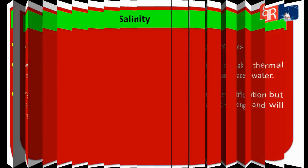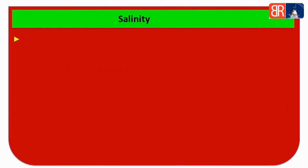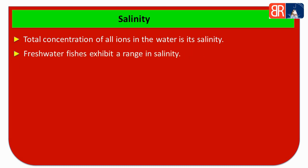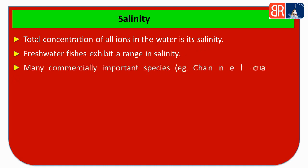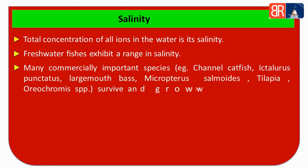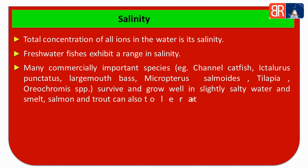Now we will discuss about salinity. The total concentration of all ions in water is called its salinity. Fresh water fishes exhibit a range of salinity tolerance. Many commercially important species, for example channel catfish (Ictalurus punctatus), large mouth bass (Micropterus salmoides), tilapia, and Oreochromis species — these are some species that can grow in slightly salty water and can tolerate it.